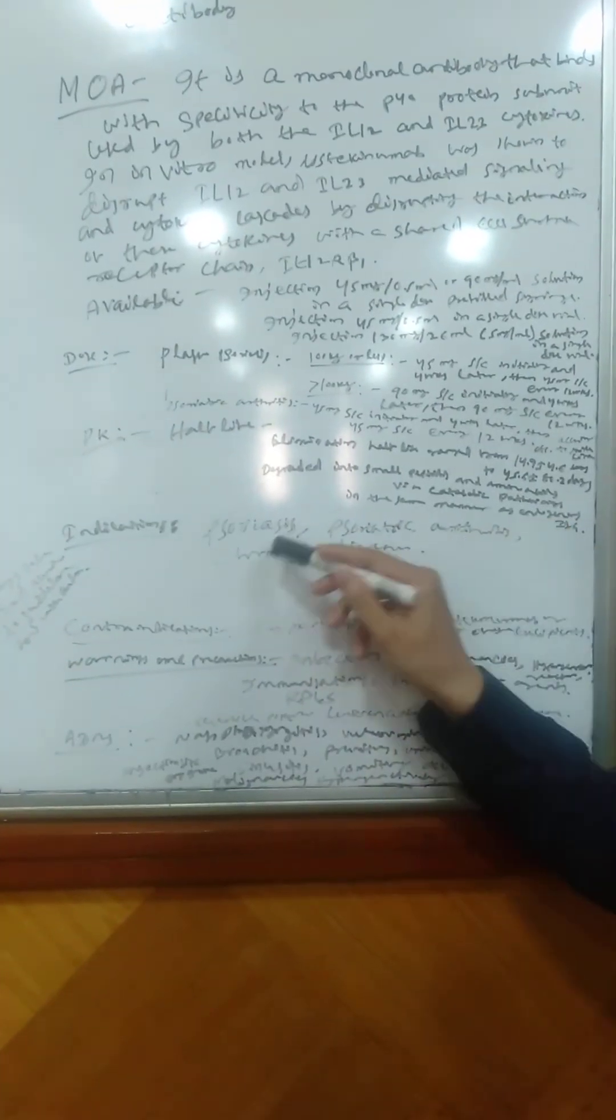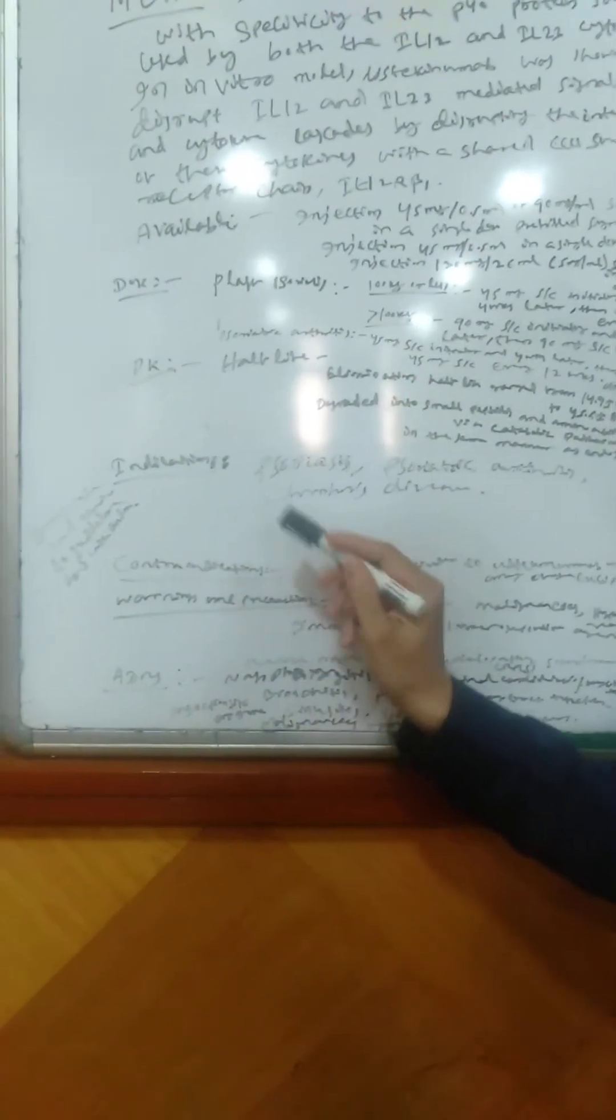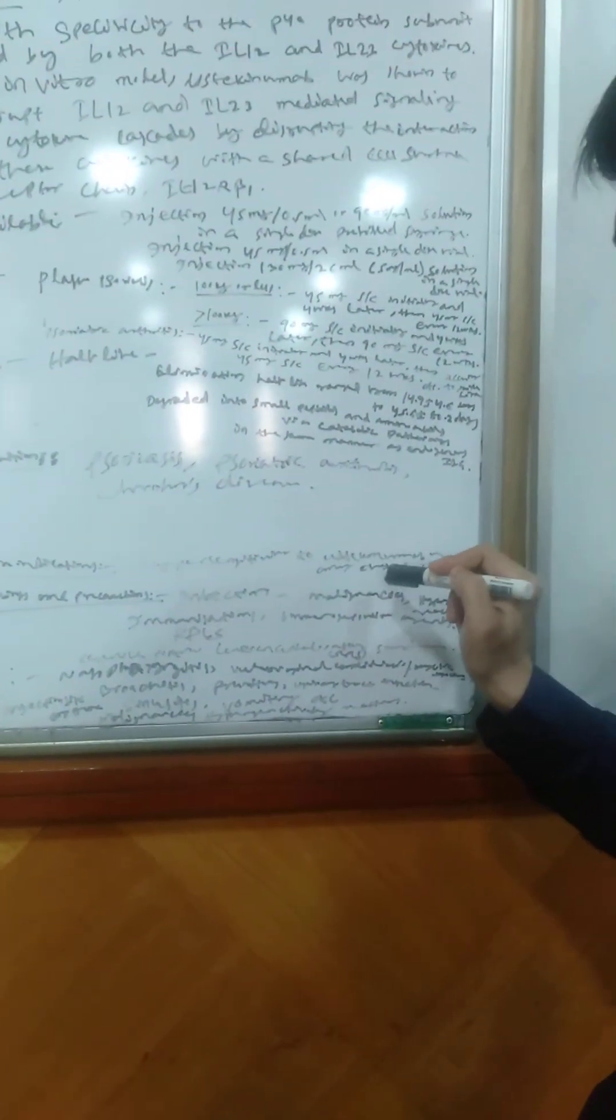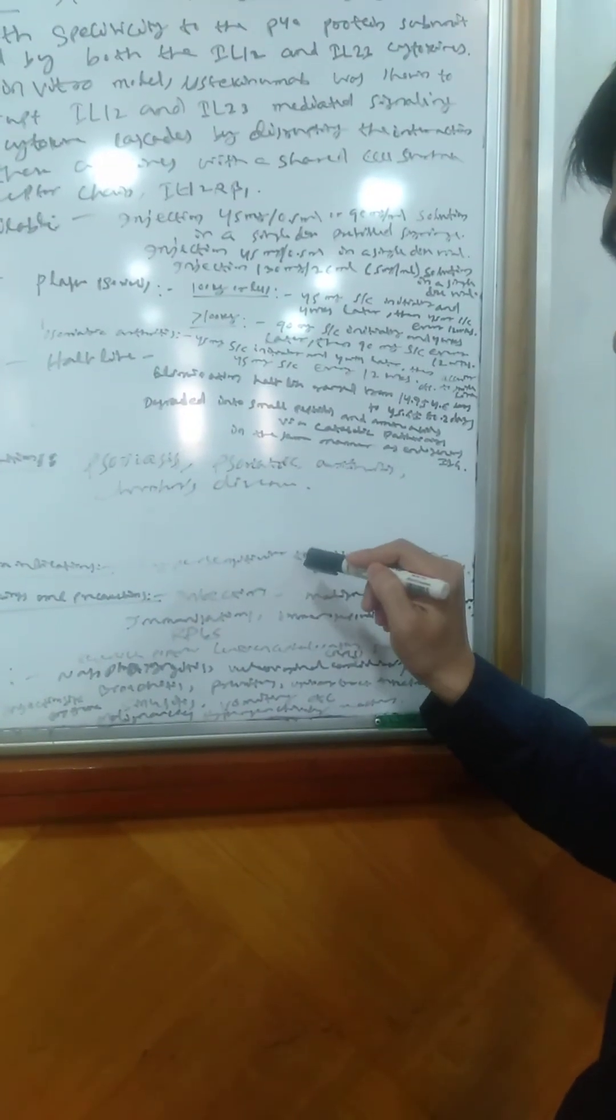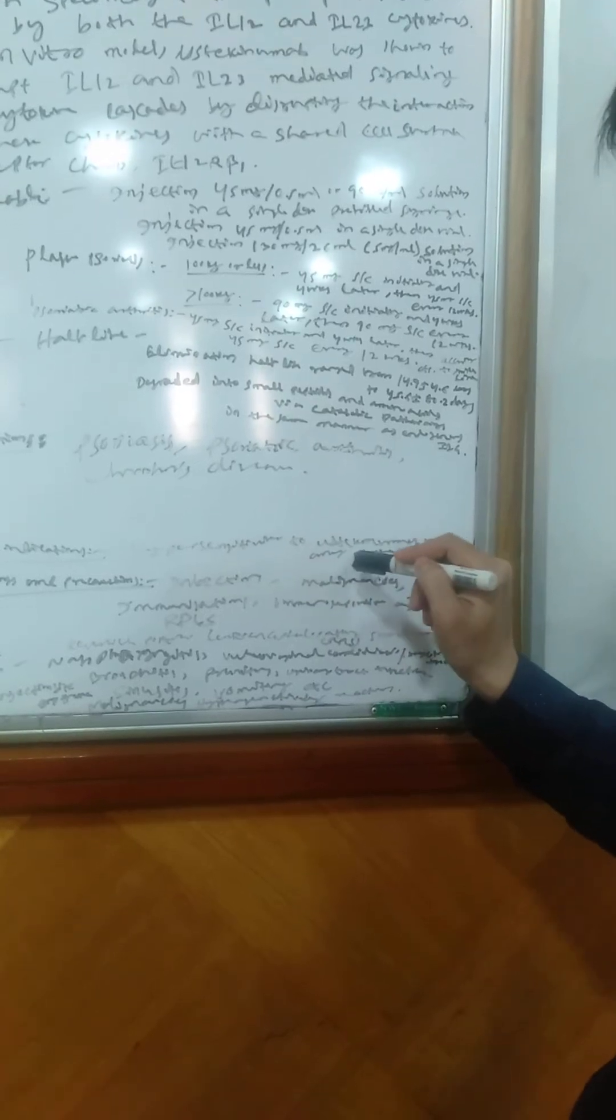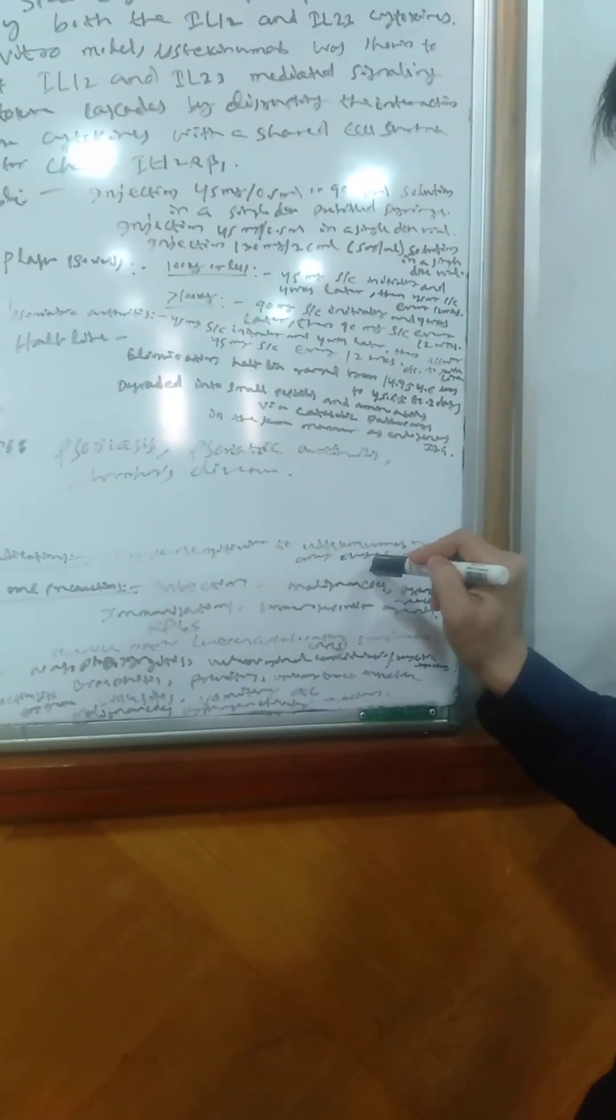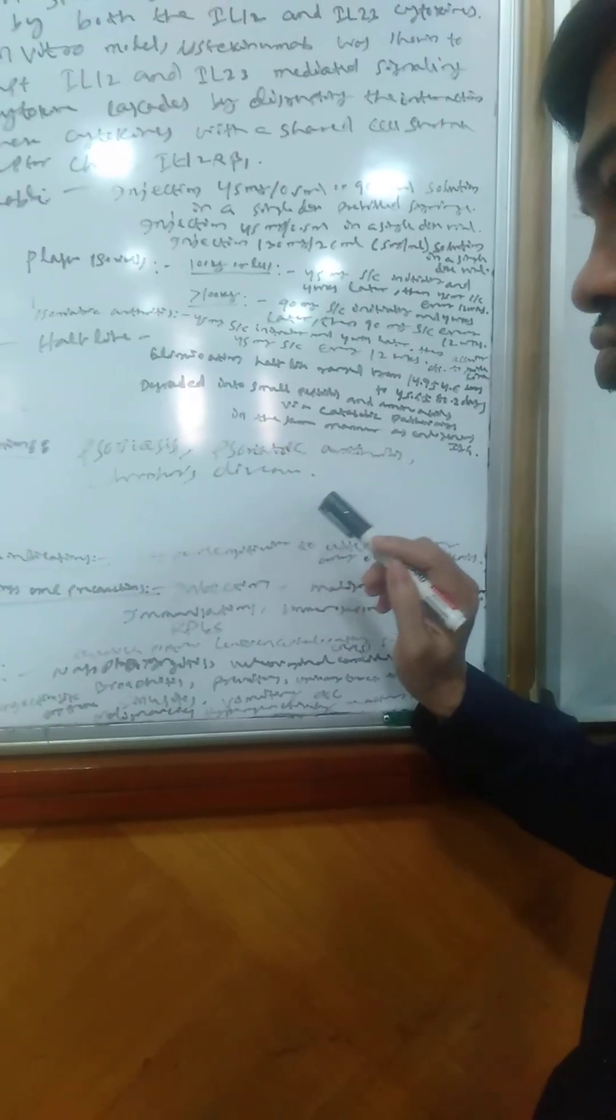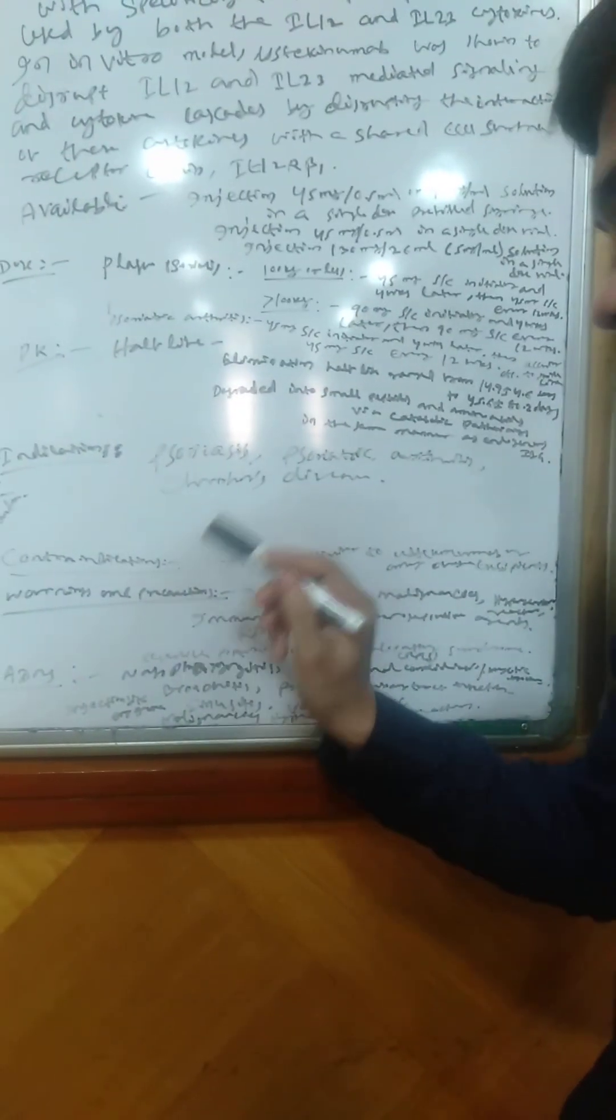Coming to the indications, it is indicated in case of psoriasis, psoriatic arthritis, and Crohn's disease. Coming to the contraindications, those patients who are hypersensitive to ustekinumab, we should not use in these patients. And also any hypersensitivity to any excipients, then we should not use this drug in these cases.